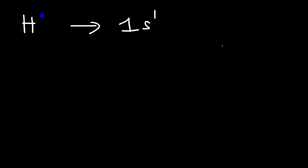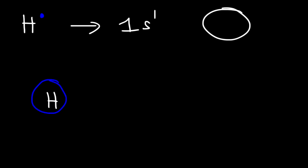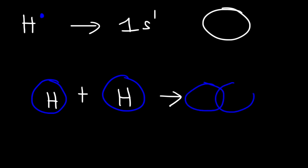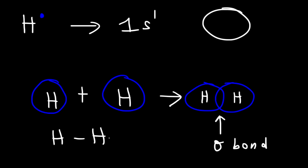Consider hydrogen again. Hydrogen has one valence electron with an electron configuration of 1s1. An s orbital has a spherical shape. When two hydrogen atoms come together, their orbitals overlap, and you get a covalent bond in the middle. Whenever two atomic orbitals overlap head to head, it is known as a sigma bond. All single bonds are sigma bonds.